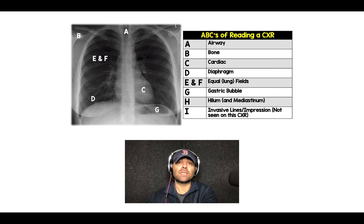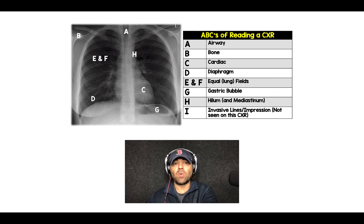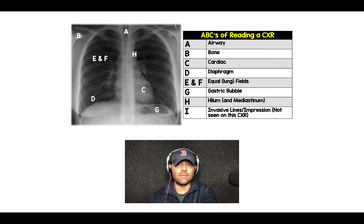G stands for gastric bubble, and this will be right underneath your left hemidiaphragm. H — which I have a little bit high in this chest x-ray — is going to be for your hilum and mediastinum. That means looking at the pulmonary arteries that are coming off and making sure that the mediastinum doesn't look widened.